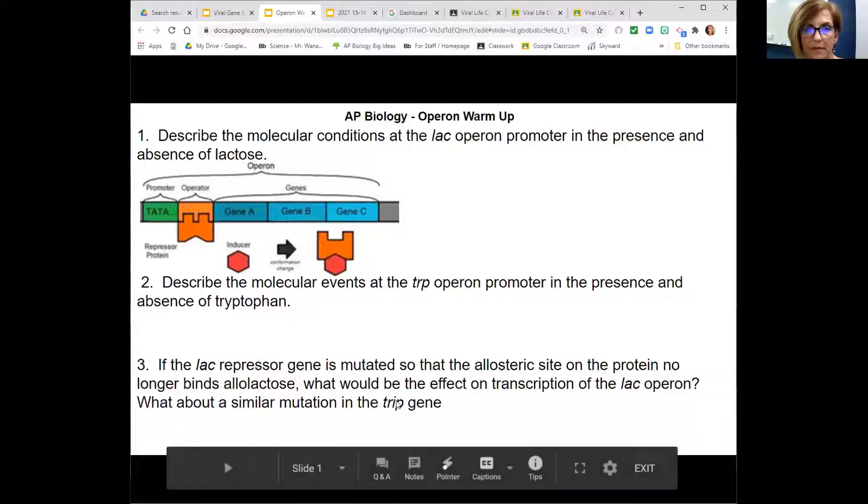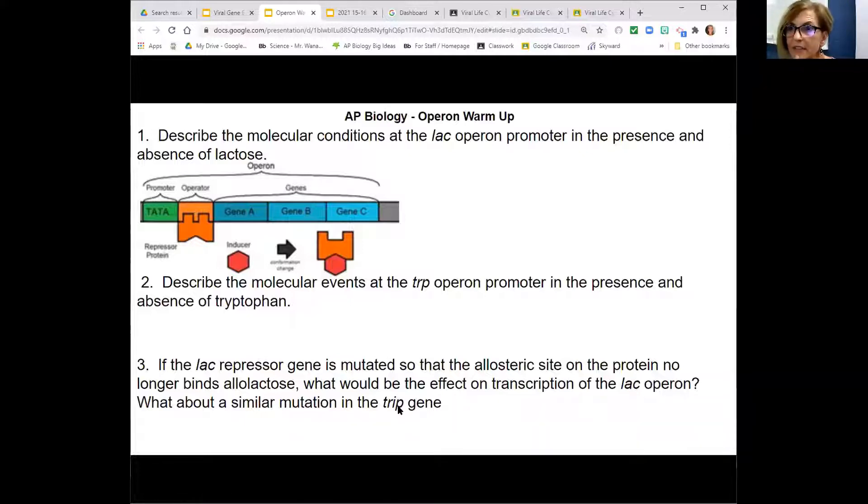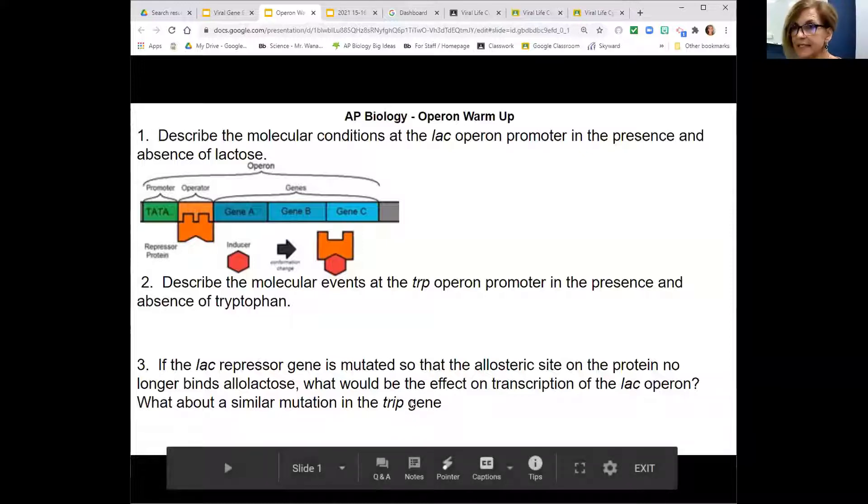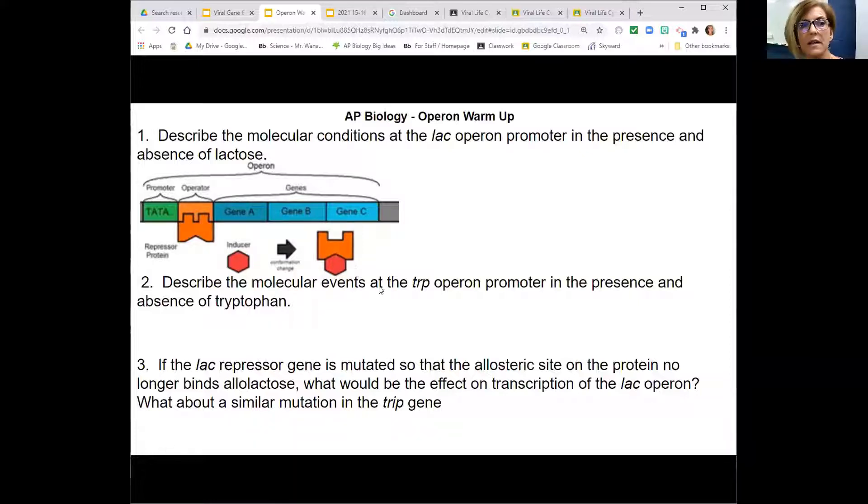And trp, T-R-Y-P, tryptophan, what do you think about that? Would it be left on or off if tryptophan could not bind its repressor? Since tryptophan acts as a co-repressor, binding the repressor allows it to stop the operator. If tryptophan cannot bind, the repressor cannot bind. Therefore, the operon will stay on. Good, you guys get that idea pretty well.